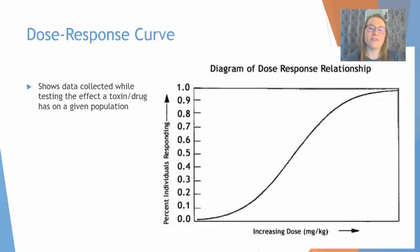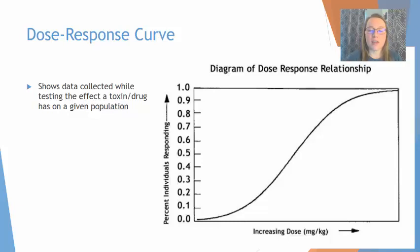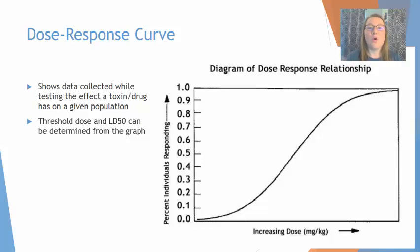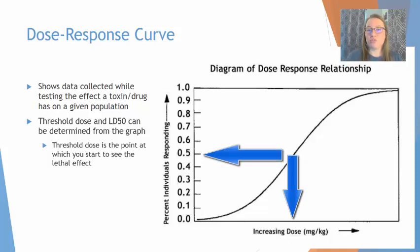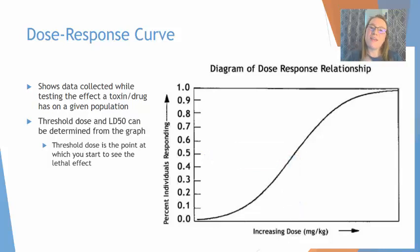We can take data from LD50 studies and plot it on a dose response curve — this is actually how we determine the LD50. Groups of the same type of organism are tested at increasing doses of a toxin, and we measure how many individuals survived or died at each dose. The LD50 is the point at which 50% of the individuals have died due to exposure.